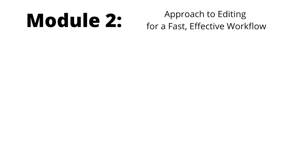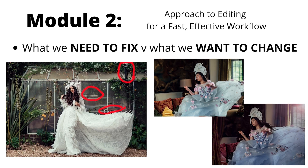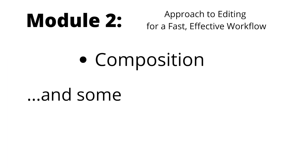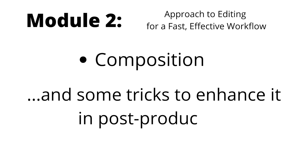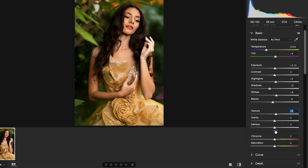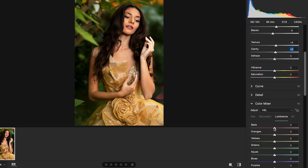Module 2: Approach to editing to achieve an easy and effective workflow. We'll look at what we need to fix versus what we want to change — those are two very different things. One is fixing problems with the image and the other is changing things from an artistic perspective. We'll be exploring colour theory and composition, and I'll be showing some really useful tricks to easily improve your composition in post-production if you perhaps didn't quite nail it in camera. I'll be teaching you how to do an initial preparatory edit of your image in Photoshop's Adobe Camera Raw, so we have a great starting point — a perfect canvas which we can then build on further in Photoshop.